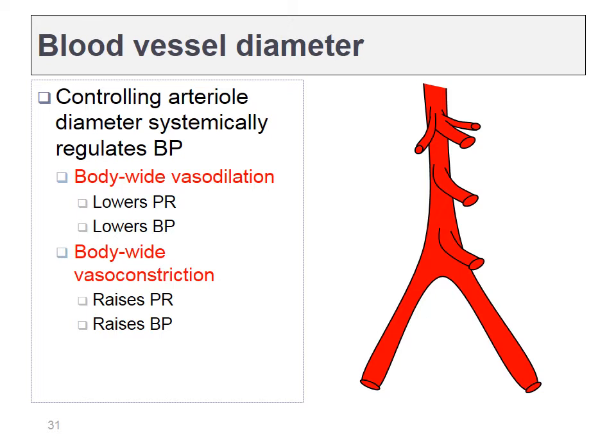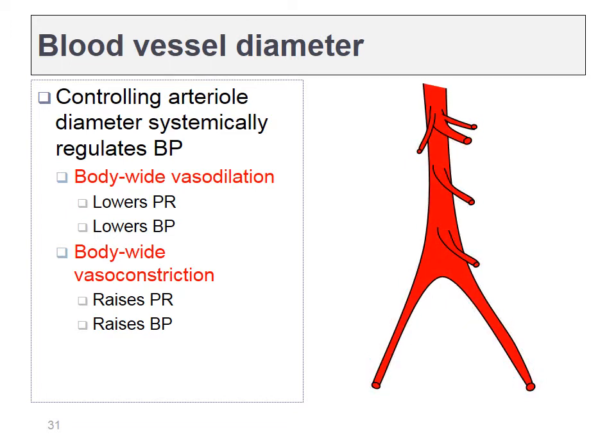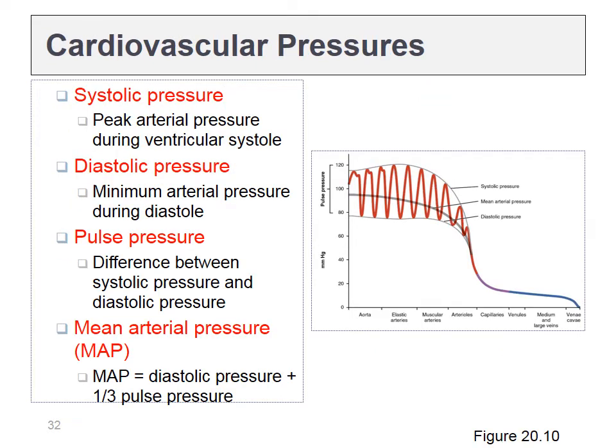Next, let's discuss vasodilation and vasoconstriction, and how changes in blood vessel diameter might change blood pressure or blood flow. This boils down to a question of whether I'm changing the diameter of all of my blood vessels — if so, that'll change blood pressure — or whether I'm vasoconstricting some while vasodilating others, in which case I might be regulating the flow of blood from certain organs to others. We can measure blood pressure easily using a sphygmomanometer, giving us a systolic and a diastolic reading.